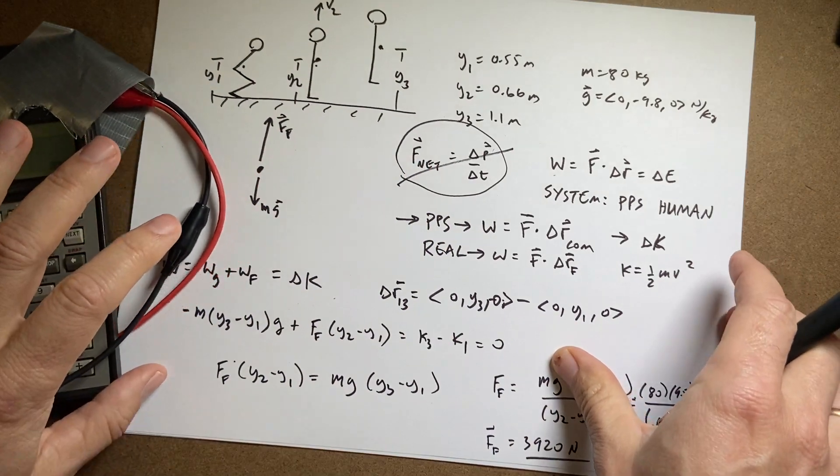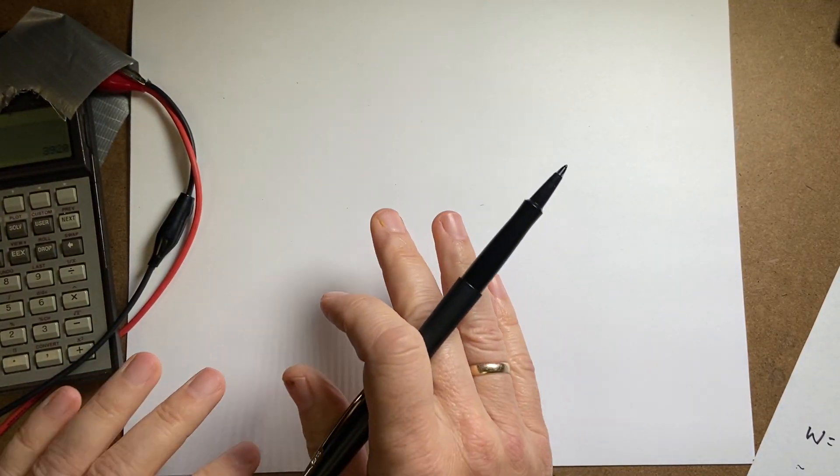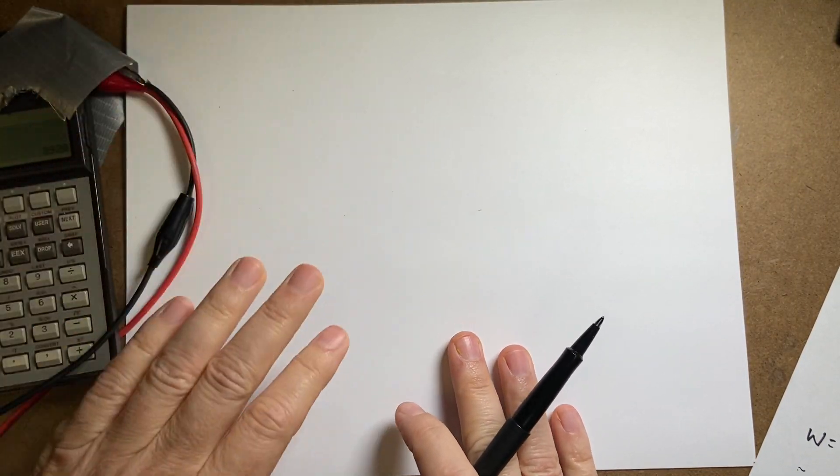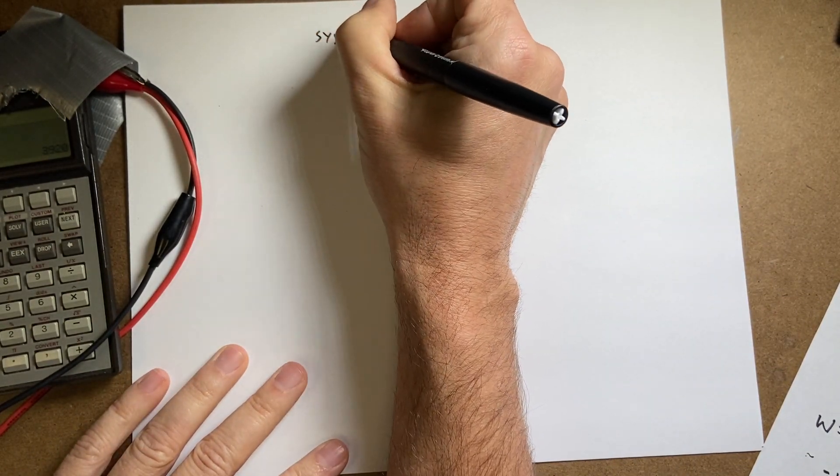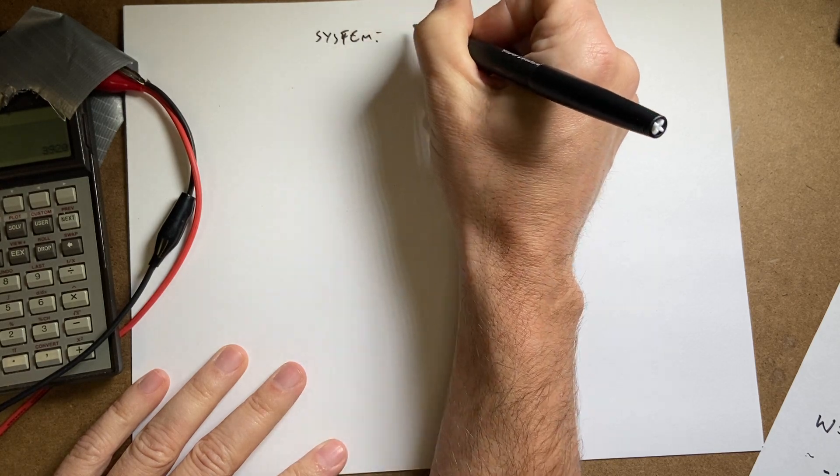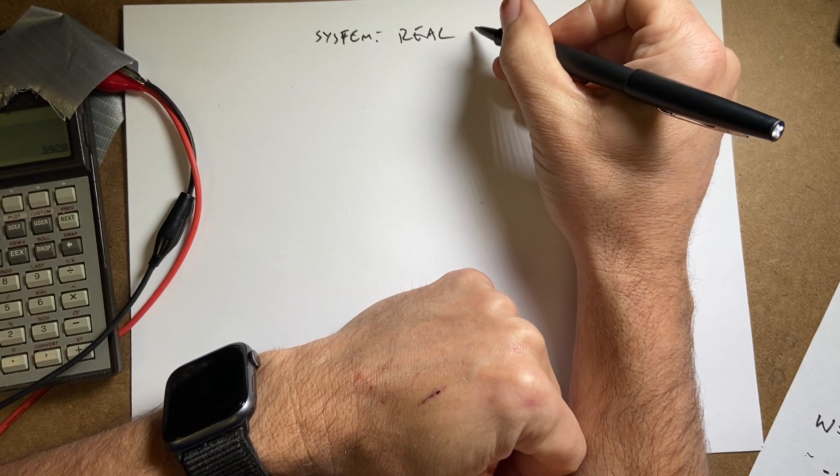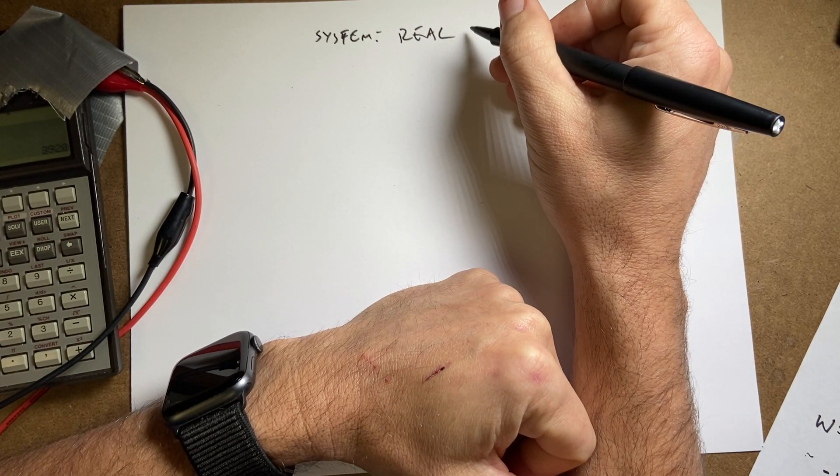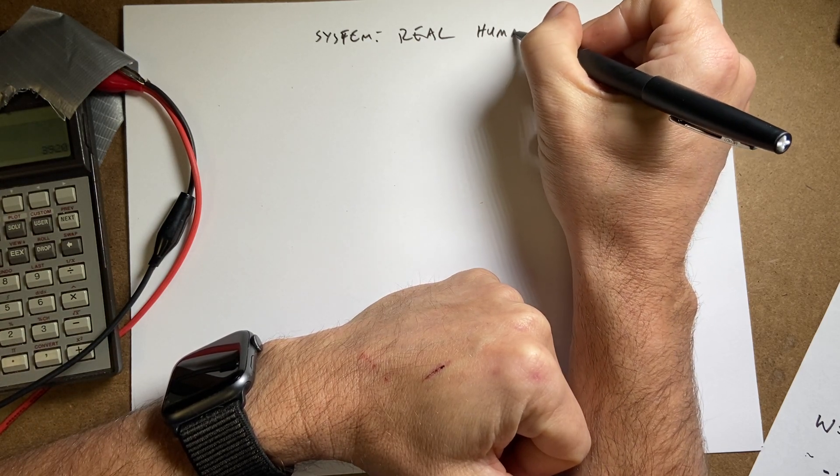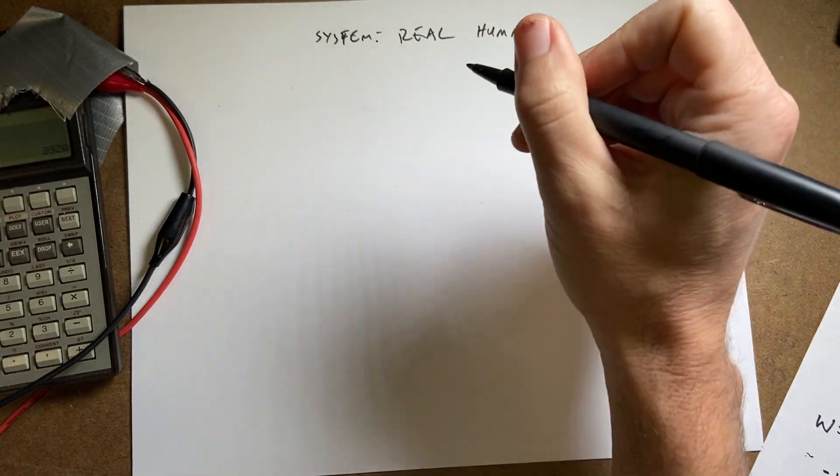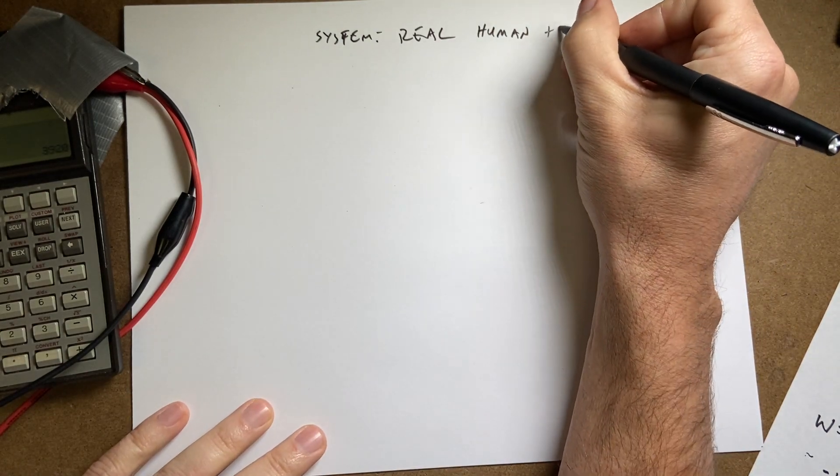Now we have part two of the question. It says what's the change in internal energy for the human? Now I can't get that from the point particle system. So now I'm going to need to use the real system. Real of, let's say, should I say the human? Human plus the earth or just the human? Because if I have the earth in there then I'll have a change in gravitational potential energy. Let's just do that. Plus earth.